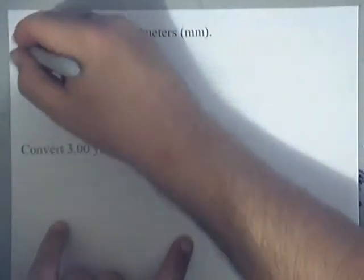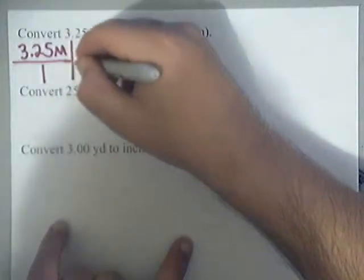Okay? On the first one, what you need to do is you need to write down the given over one, which is 3.25 meters over one.